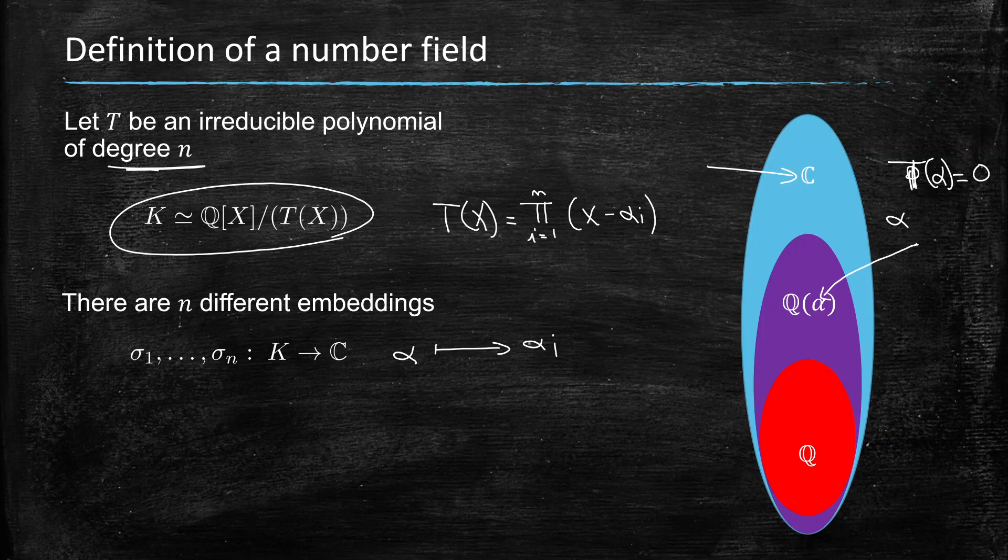Now, there are some of those embeddings that actually have the property that they are included in the reals, and we call that a real embedding, which means that it's stuck in the real numbers, and there is going to be r1 real embeddings.